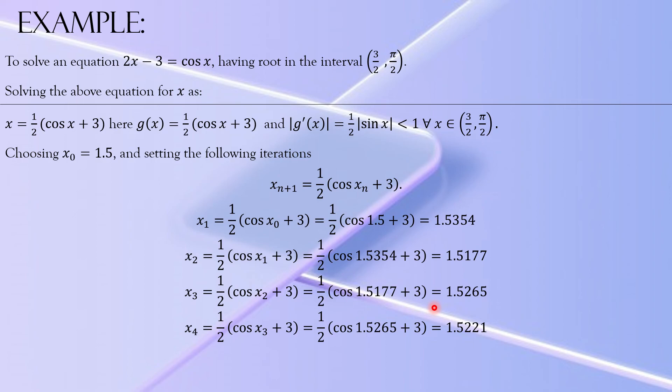Then using this value 1.5177 here and finding x₃ that is 1.5265, using this value for x₄ - that's 1.5221. Repeating this process we find x₅, x₆, and x₇. So x₇ is correct up to 3 decimal places. If you want to increase the number of decimal places, obviously we'll be doing more iterations.